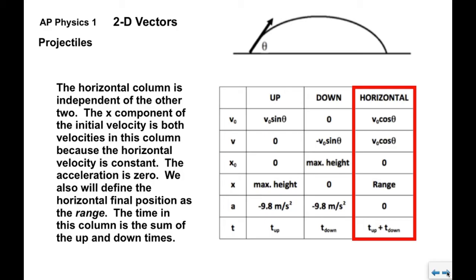The horizontal column separates horizontal motion from vertical — gravity has no effect here, so it is completely independent of the other two columns, with the possible exception of the times. The initial and final velocities in the horizontal column are each equal to v-naught-x, the x-component of the muzzle velocity, since horizontal velocity is constant. Acceleration is zero. The final position is what we call the range — the total horizontal distance traveled by the projectile. The time in the horizontal column equals t-up plus t-down.